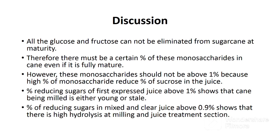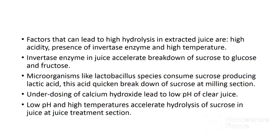A percentage of reducing sugars in mixed and clear juice above 0.9% shows that there is high hydrolysis at the milling and juice treatment sections. Factors that can lead to high hydrolysis in juice extracted from sugarcane are high acidity, presence of invertase enzyme, and high temperature. Invertase enzyme in juice accelerates breakdown of sucrose to glucose and fructose. Microorganisms like Lactobacillus species consume sucrose, producing lactic acid, which quickens the breakdown of sucrose at the milling section. Underdosing of calcium hydroxide leads to low pH of clear juice, and this low pH combined with high temperatures accelerates hydrolysis of sucrose at the juice treatment section.